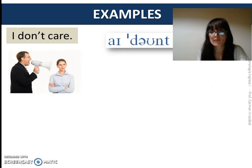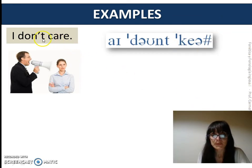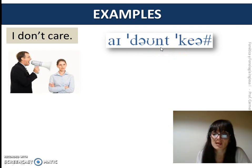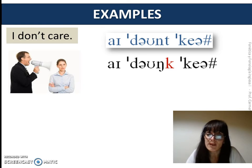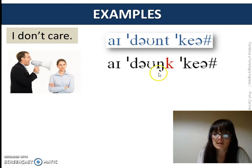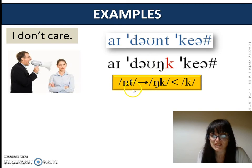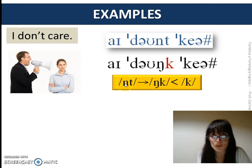What happens in this next example? In this case, we have alveolar sounds followed by a velar sound. What do you think happens? The alveolar sounds change into velar ones under the influence of the following velar plosive. Why does this happen? To simplify the pronunciation of sounds — instead of producing two different articulations, we pronounce just one.